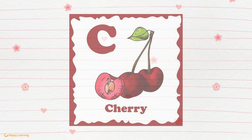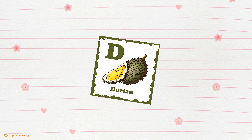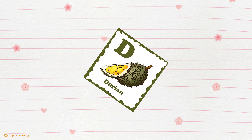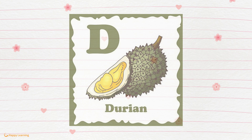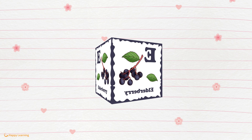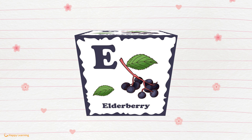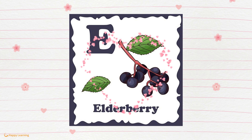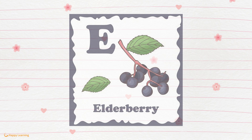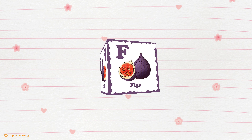D is for Durian. E is for Elderberry. F is for Figs.